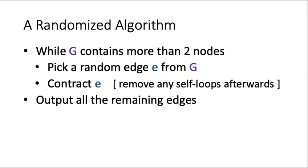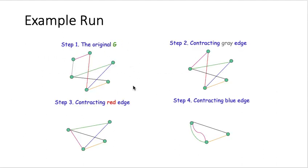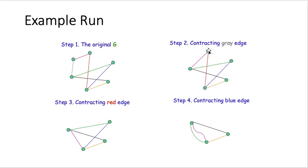What is edge contraction? In this example, this is the original graph G, and we look at the gray edge. In the first step, we contract the gray edge. What happens is that the endpoints of the contracted edge merge together into one node. We put these two nodes together, and the graph becomes something like this.